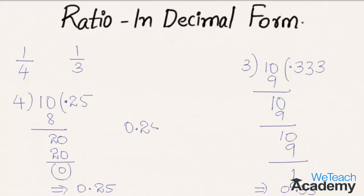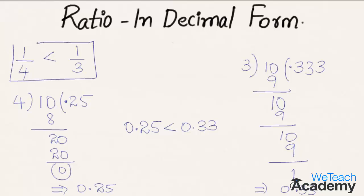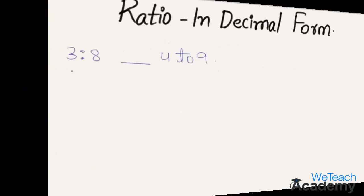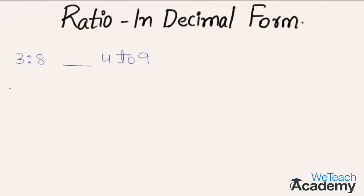Comparing both decimals, we can say that 0.25 is less than 0.33, so 1/4 is less than 1/3. Now let us proceed with the next example: 3 is to 8, that is 3 divided by 8.